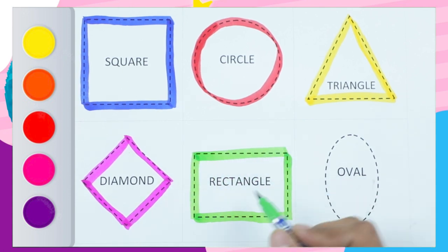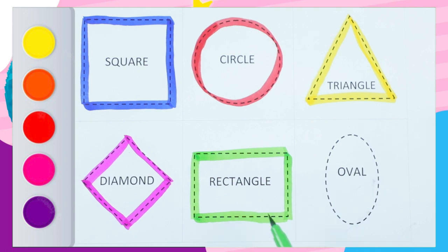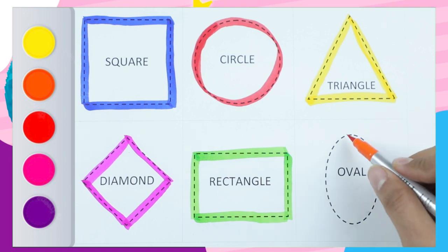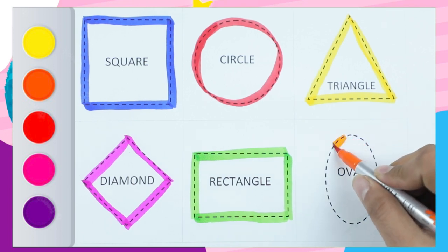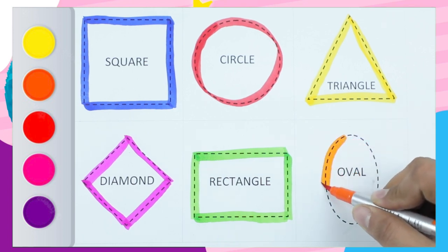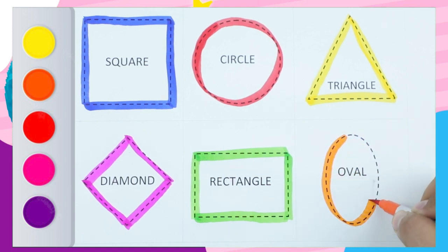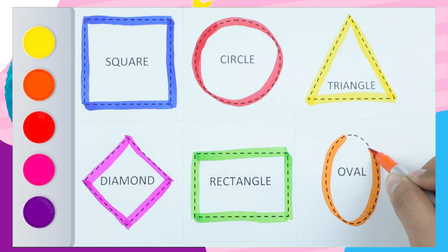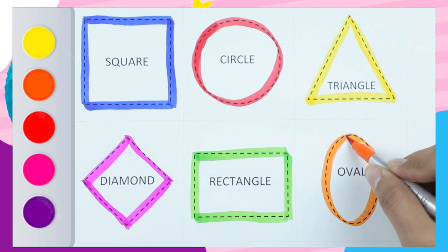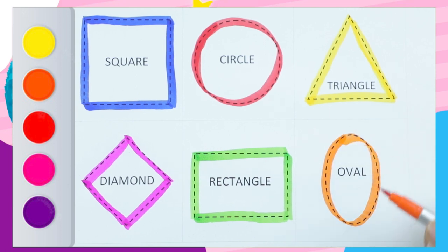Two sleeping lines, two standing lines — it's a rectangle! Green color rectangle. Orange color oval — it's an oval. Orange color oval shape.